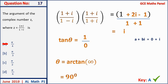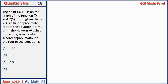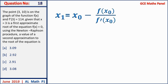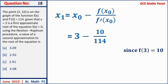Question 18: using Newton-Raphson, f(3) = 10 and f′(3) = 114. The second approximation is x₁ = x₀ − f(x₀)/f′(x₀) = 3 − 10/114 ≈ 2.91. The answer is C.